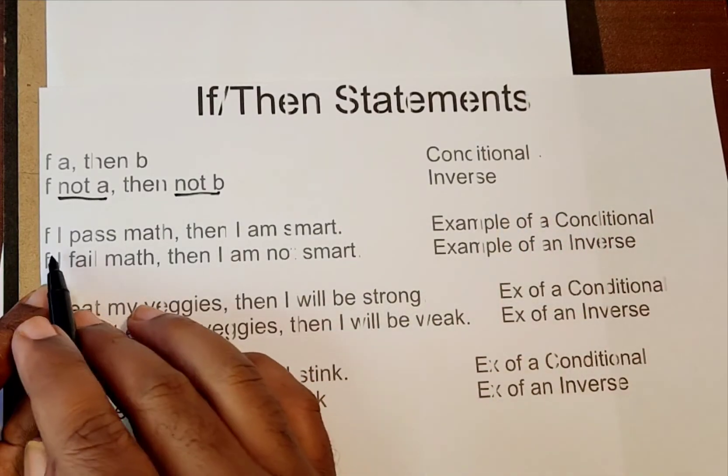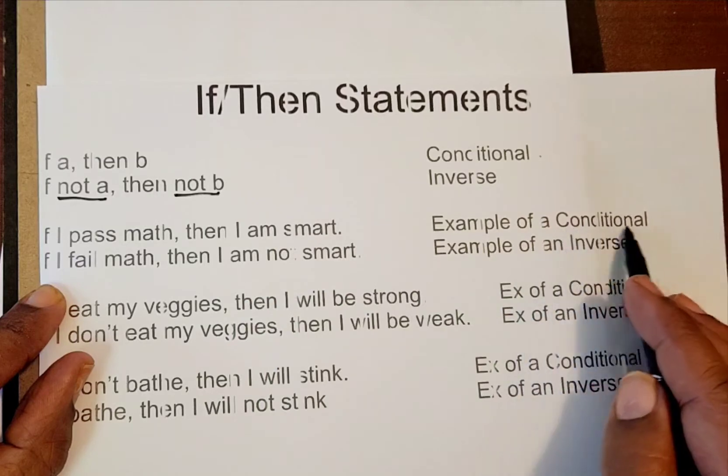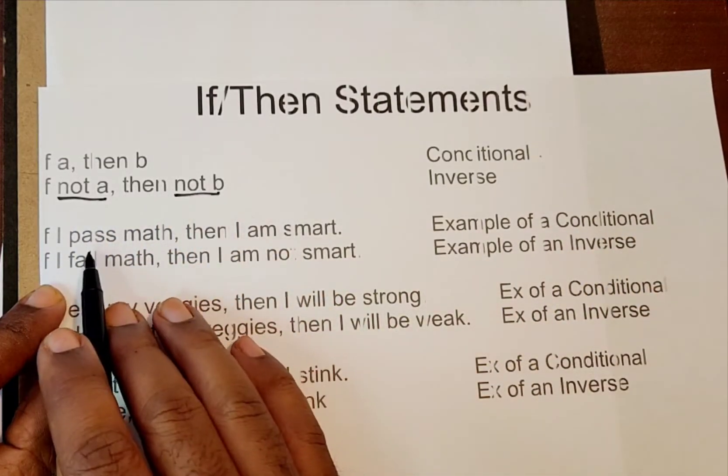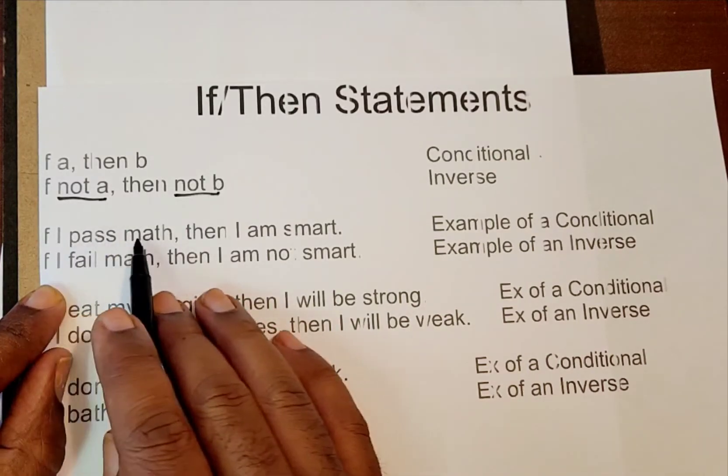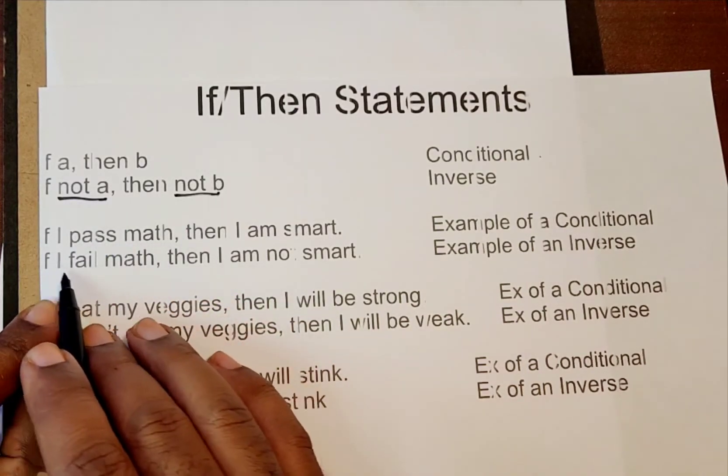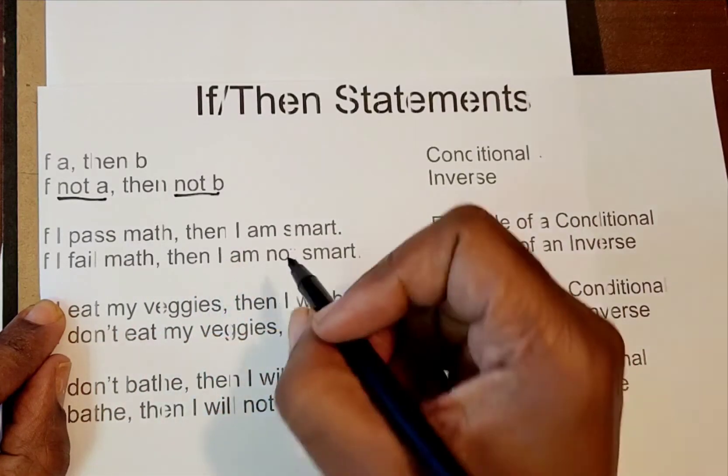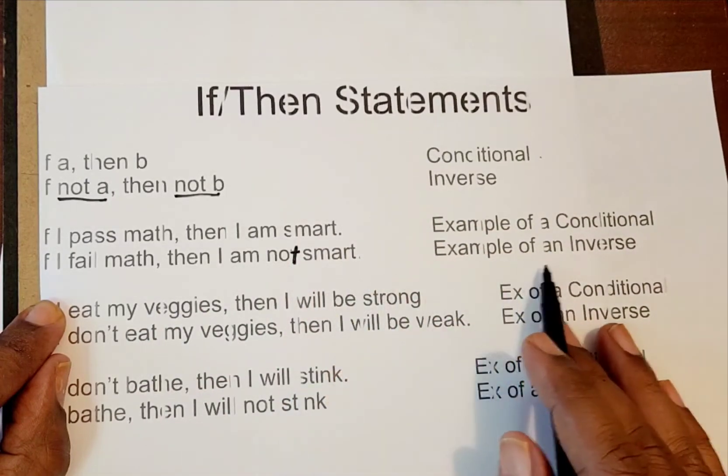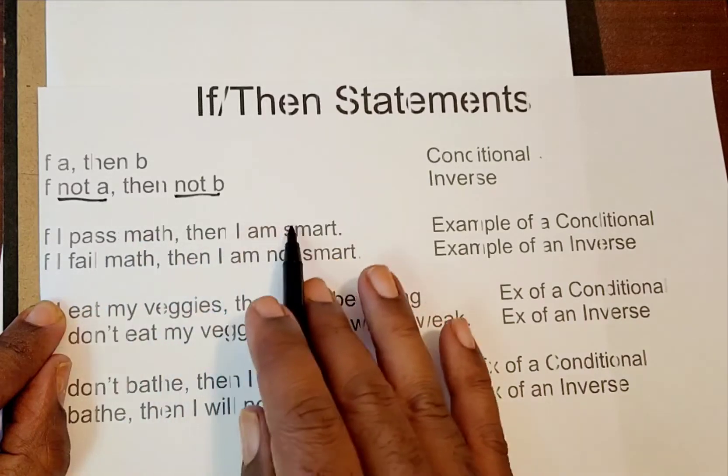Here's some examples. If I pass math, then I am smart. Okay, that's our conditional. Now, let's put a not in both of these. So, what does it mean to not pass math? That's fail math. So now, if I fail math, I am not smart. That's supposed to be a T there. I am not smart. That's how you make an inverse. You make everything the opposite here.